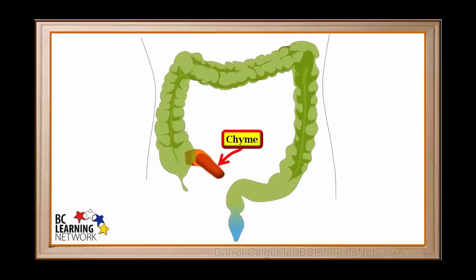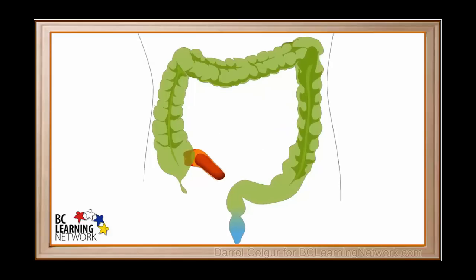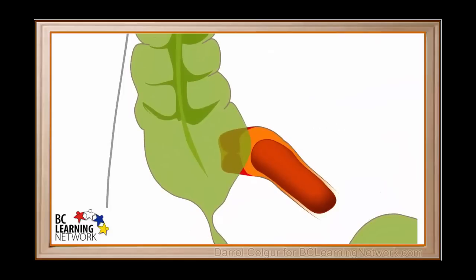Now we'll imagine some chyme near the exit point of the small intestine. When the chyme is at this point, almost all of its nutrients have been absorbed into the bloodstream by the small intestine. What remains is almost all undigestible material. Now we'll zoom in a bit. The chyme moves from the small intestine into the cecum.